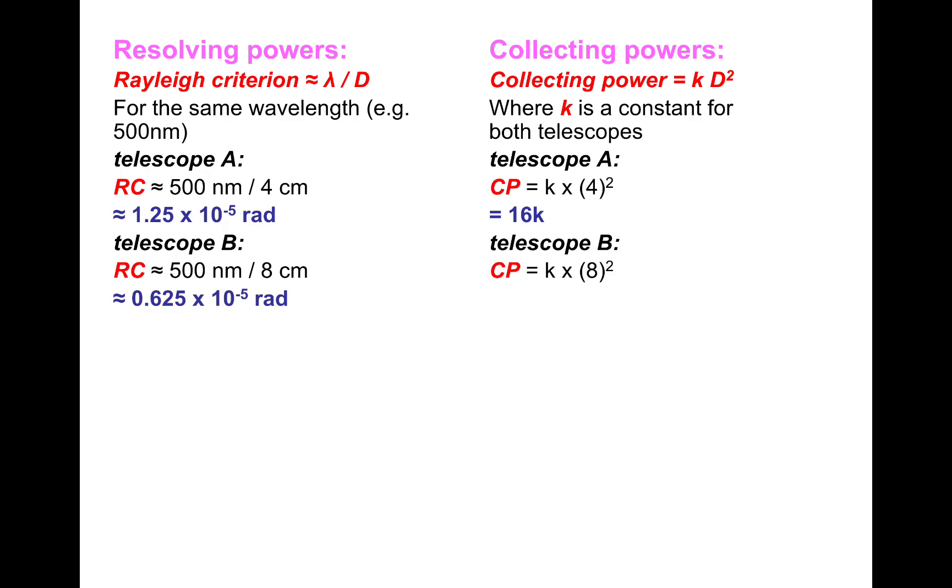And for Telescope B, that's got a diameter of 8, so that would be 8 squared times K, which would be 64K. So Telescope B - you could do a ratio of 64 divided by 16. Telescope B has got a much higher collecting power, which is the more expensive one.